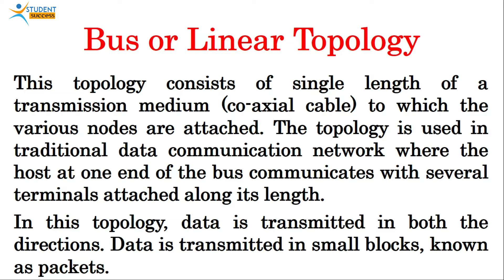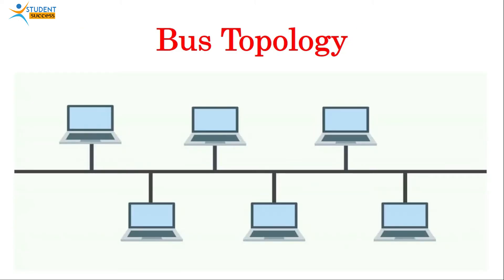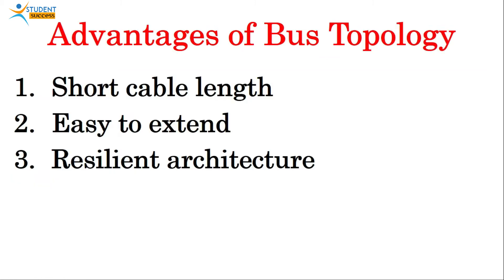In bus topology, data is transmitted in both directions in small blocks known as packets. Here you can see the pictorial representation of bus topology, where every node is connected through a coaxial cable. Data is transmitted in the form of packets and reaches the first node, then the second node, then the third node, until it reaches its destination.